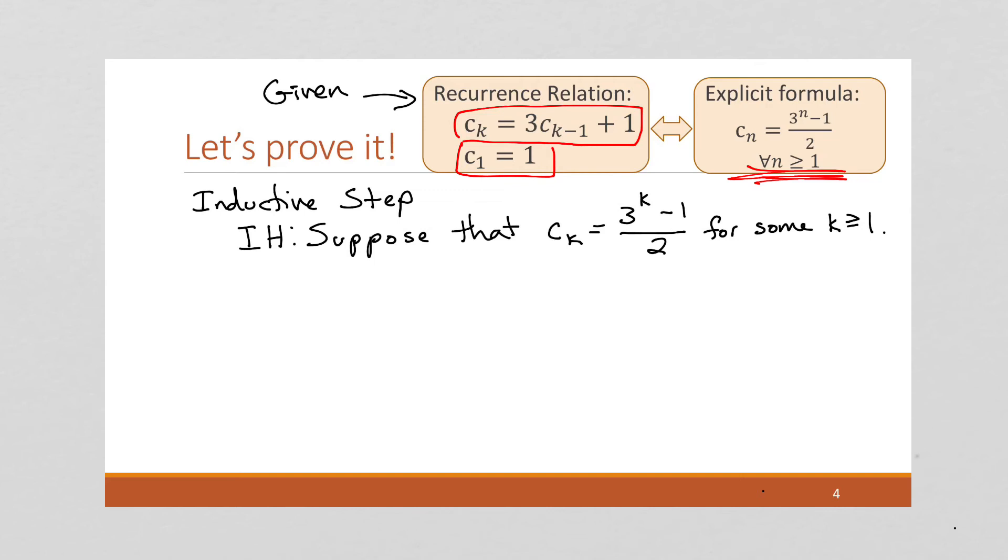And what do we want to show? We want to show that this thing c of k plus 1 is equal to 3 to the k plus 1 minus 1 over 2.